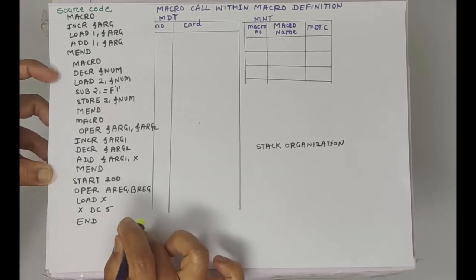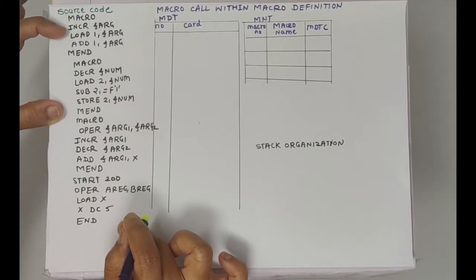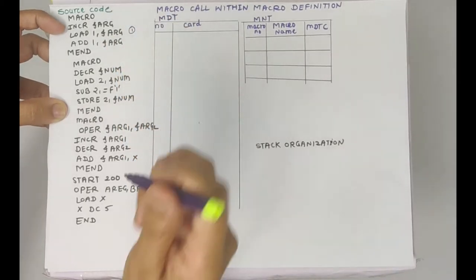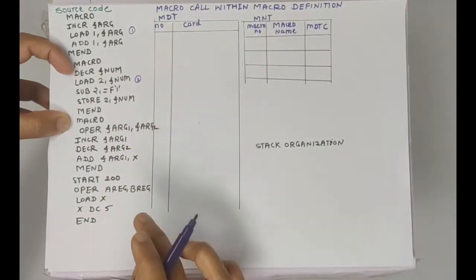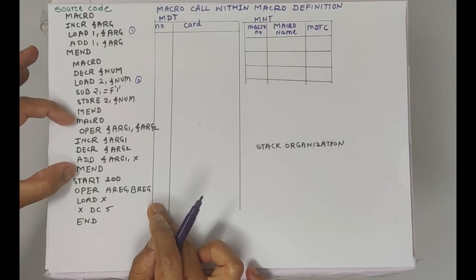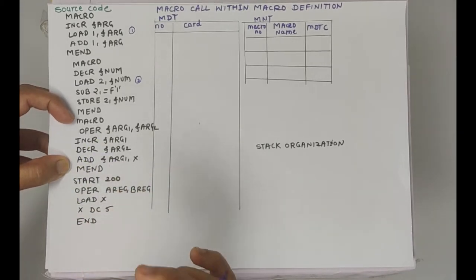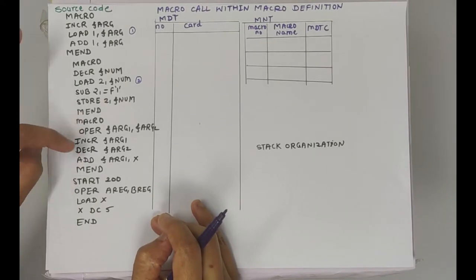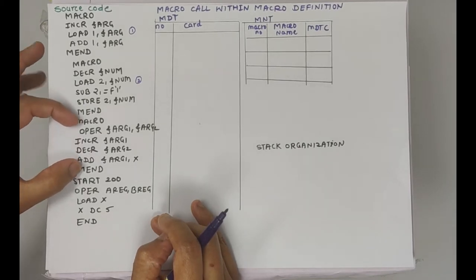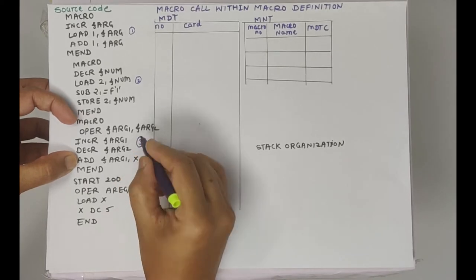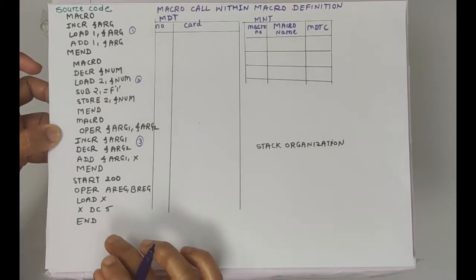Now here you can see in this program there are three macros. The first is a macro whose name is INCR — this is my first macro. The second macro is DECR, here is the definition of this macro. The third macro is OPER, and this OPER has INCR and DECR as macro calls inside it — meaning this is a macro call inside a macro definition. We will see how to convert this source program into target program, meaning how to remove the macro definitions as well as macro calls.